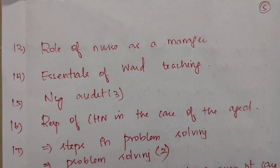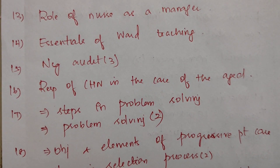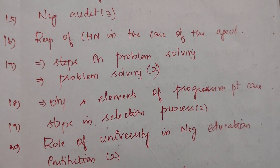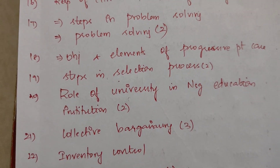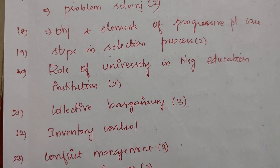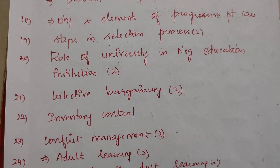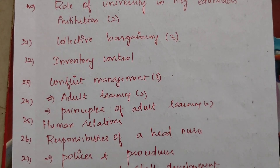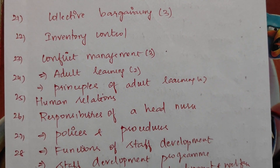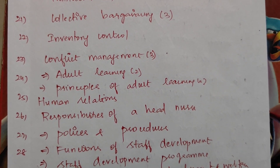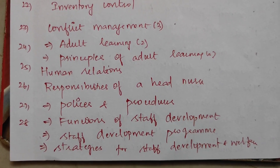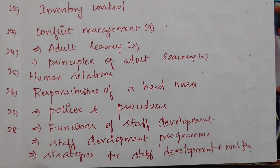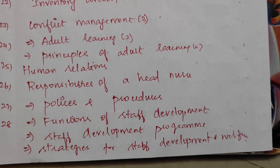Role of nurse as management. Essentials of ward teaching. Nursing Audit — three times. Responsibility of community health nurse in care of AIDS. Steps in problem solving. Objectives and elements of progressive patient care. Steps in selection process — two times. Role of university in nursing education institution. Collective bargaining — three times. Inventory control. Conflict management — three times. Adult learning — two times. Principles of adult learning — two times. Human relations. Responsibility of head nurse. Policies and procedures. Functions of staff development program. Strategies for staff development and welfare.